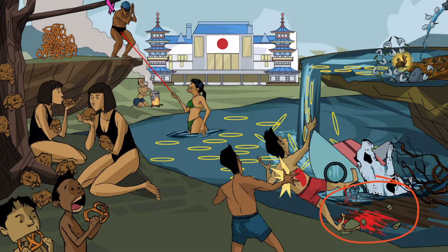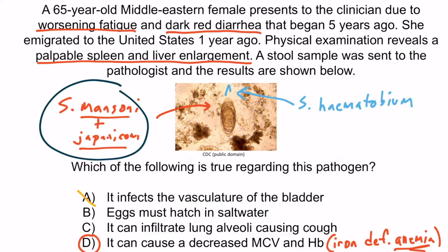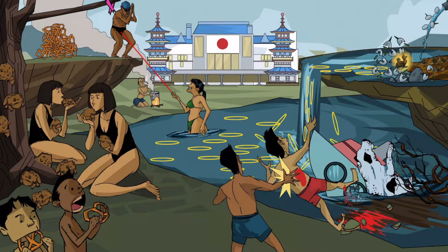This presentation is consistent with schistosoma mansoni and japanicum because those features are on the ground level, same level as the mansion and Japanese embassy. Schistosomiasis eggs have spines. Answer A is incorrect because bladder vasculature infection is true of schistosoma hematobium, not mansoni and japanicum. Answer B is incorrect because eggs must hatch in freshwater — salt kills snails. Answer C is incorrect because lung alveoli infiltration causing cough describes Loeffler syndrome, associated with strongyloides, ascaris, and hookworm, not schistosoma. Pulmonary hypertension from schistosoma affects arterioles, not alveoli. That's all you need to know about schistosoma.